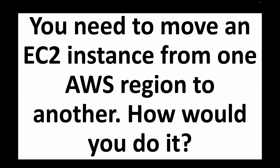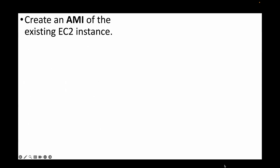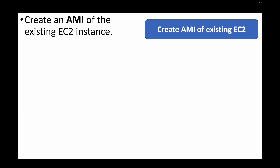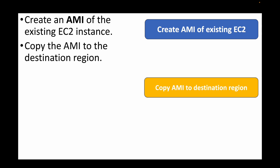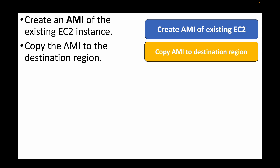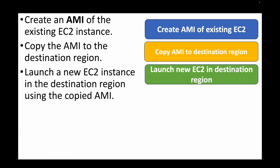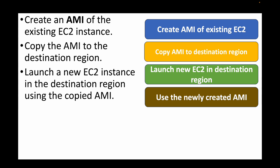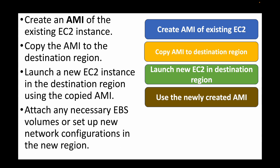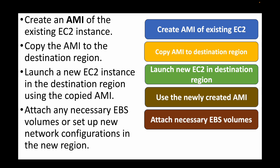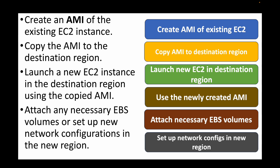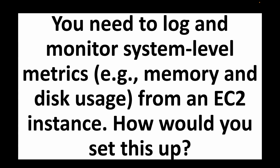The next question: how would you move an EC2 instance from one AWS region to another? We will create an AMI of the existing EC2 instance and then copy that AMI to the destination region. Once the AMI is copied, we launch a new EC2 instance in the destination region using the copied AMI, and then attach any EBS volumes or set up any new configurations based on the requirements in the new region.